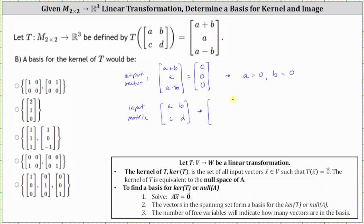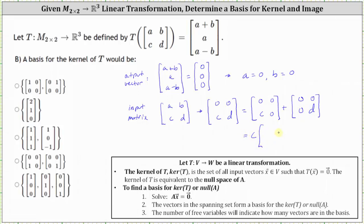Therefore, the kernel would consist of two by two matrices in the form (0, 0, C, D), which we can write as a sum of two matrices: the matrix (0, 0, C, 0) plus the matrix (0, 0, 0, D). Factoring out C and D, we have C times the matrix (0, 0, 1, 0) plus D times the matrix (0, 0, 0, 1).